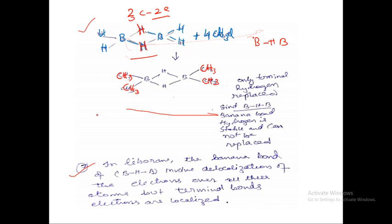So these are the properties and the structure of diborane — the banana bond or tau bond, also known as the three-center two-electron bond. I'll be sending you the PDF file after this class. I hope you liked this video, and if you have any doubts or problems, you can kindly approach me so that we can discuss in the upcoming video. Thank you very much for watching.